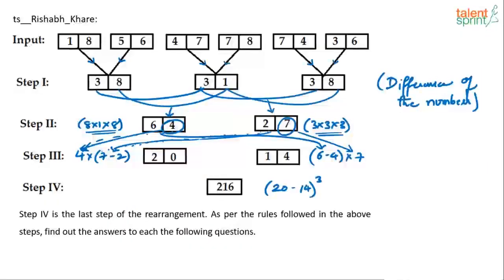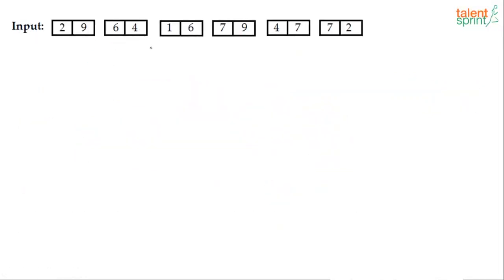Now, based on this, let us find out the answer to the given question. So an input has been given to us. What do we do? Step one. What should be step one? We know in step one we'll have three numbers. The first number is the difference of these two. Second number is the difference of these two. Third number is the difference of these two. So what should we get in step one? 64 minus 29 is 35. 79 minus 16 is 63. 72 minus 47 difference is 25.